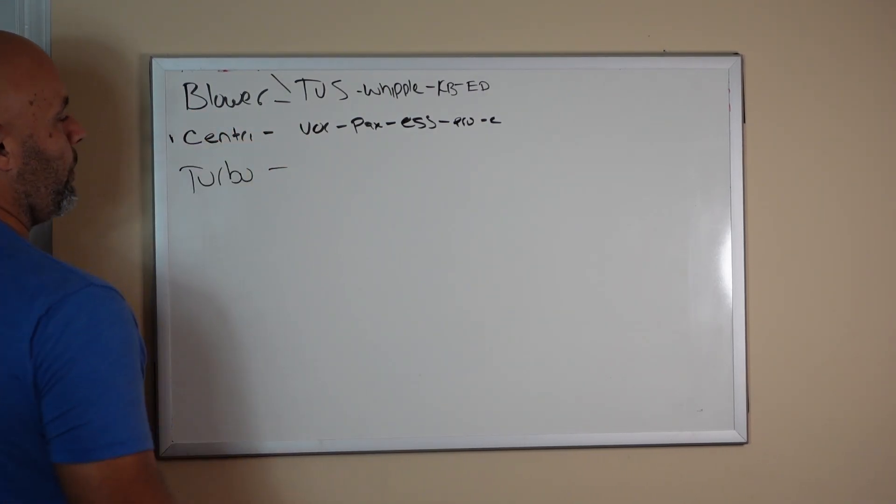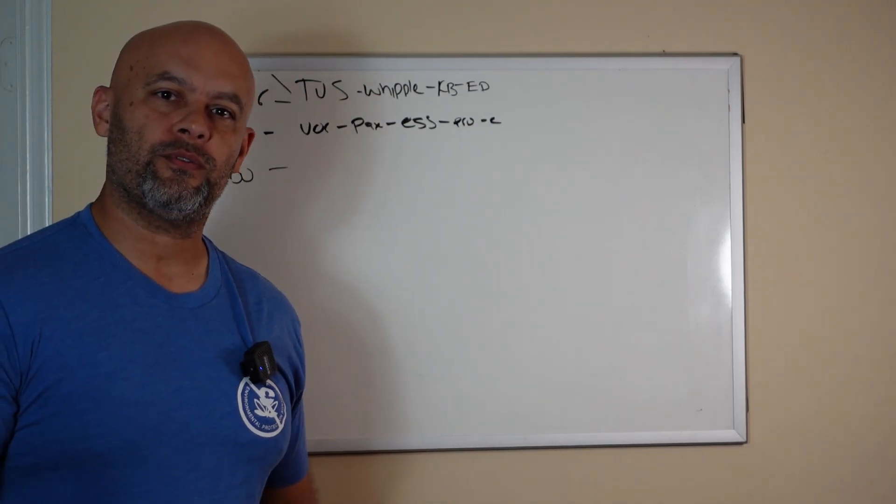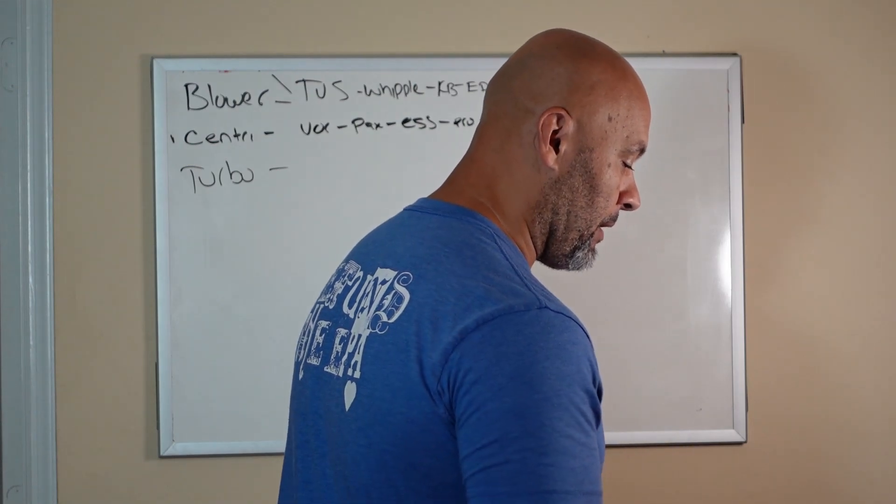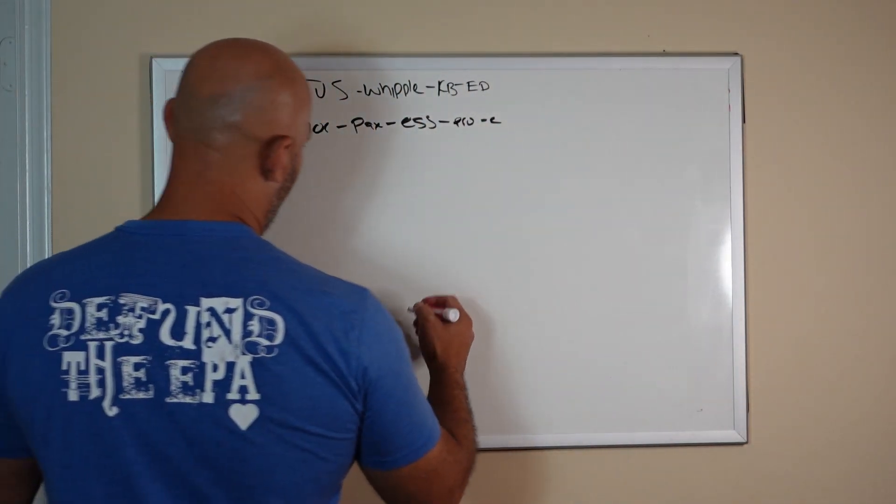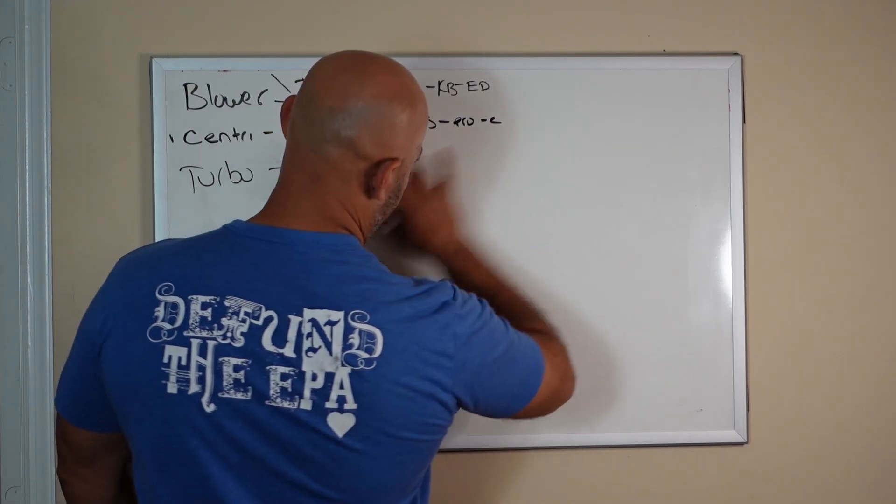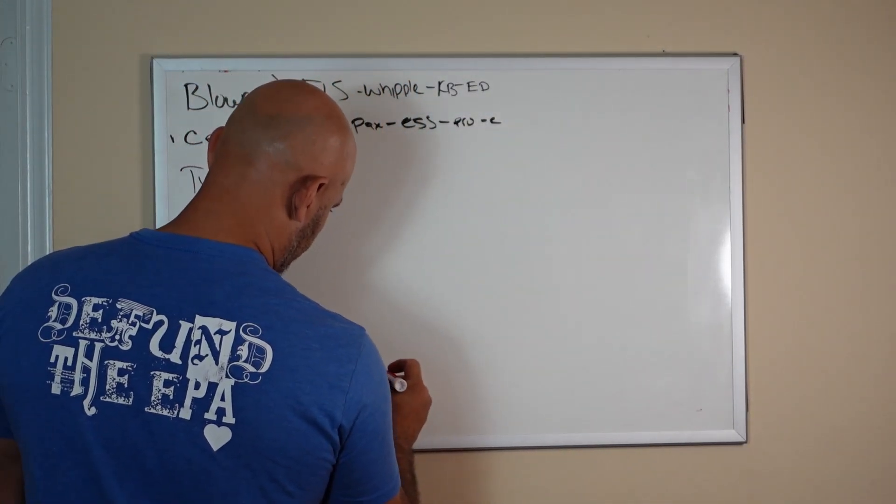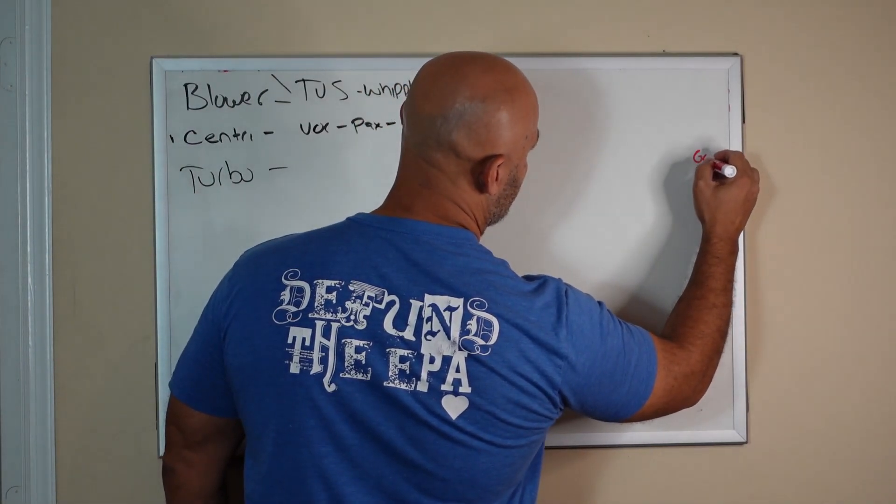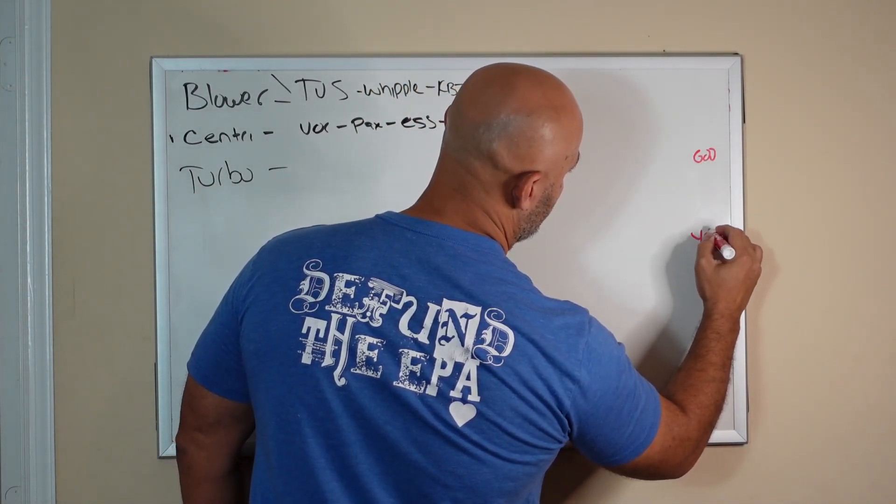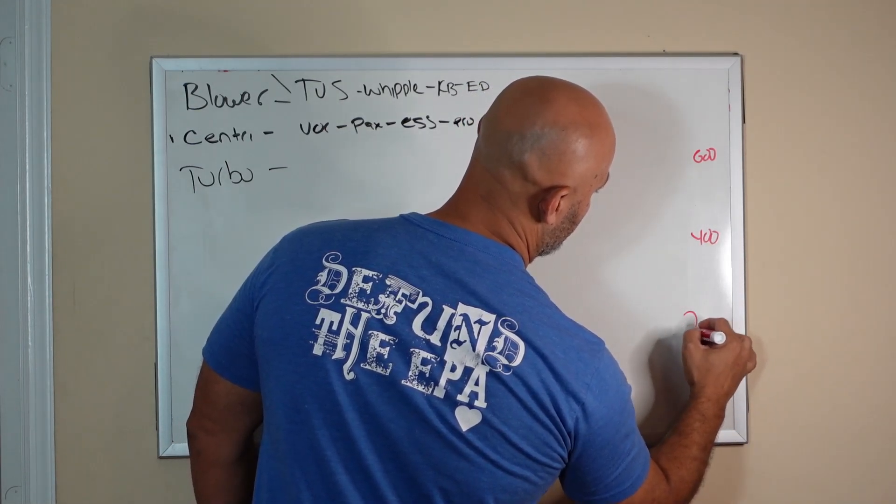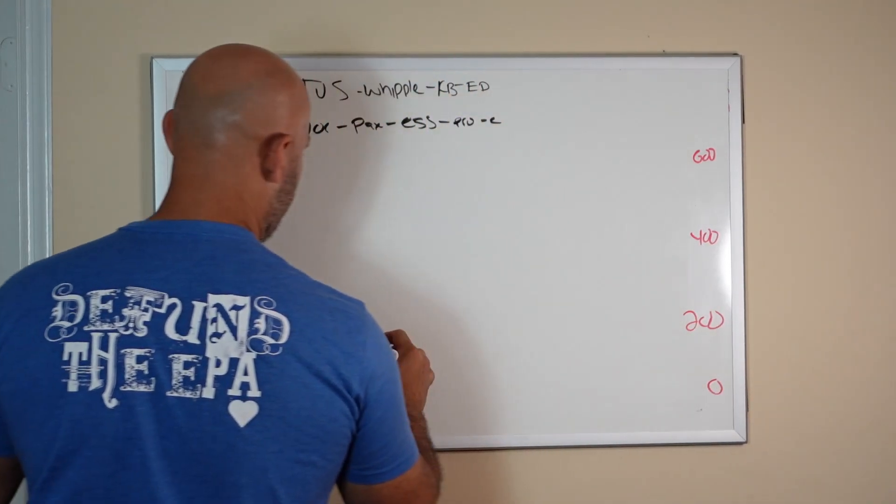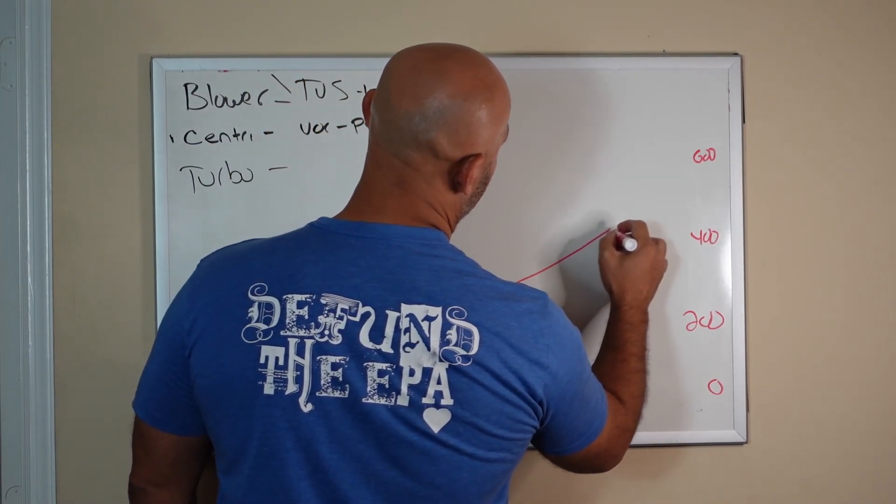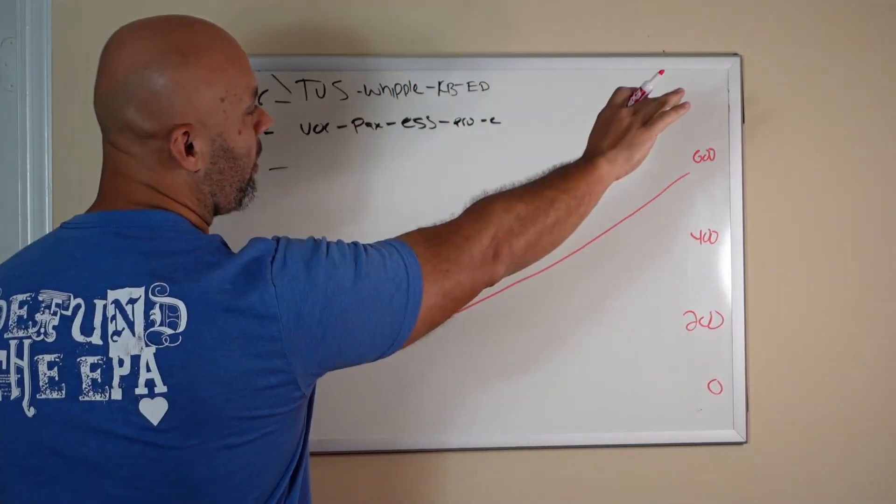What happens when you install a centrifugal supercharger on the car? When you look at a dyno log, a dyno log will show you that the horsepower curve. Let's say this is a dyno graph, and what you're going to see is a centrifugal, let's say if it makes 600, let's say this is 400, 200. You're going to see power delivery be very linear and it goes up like that.